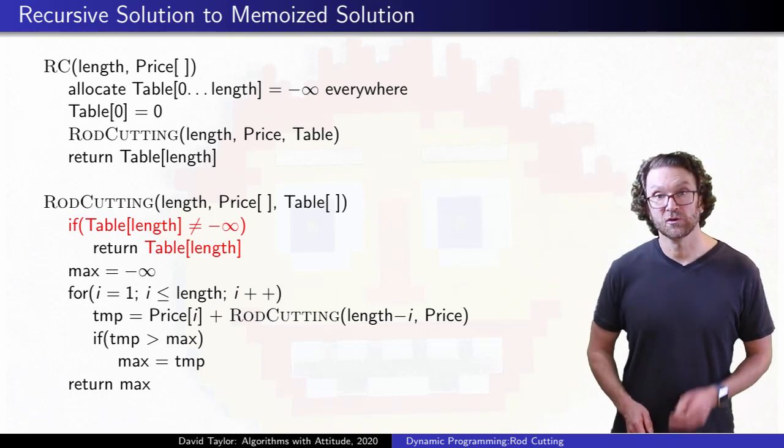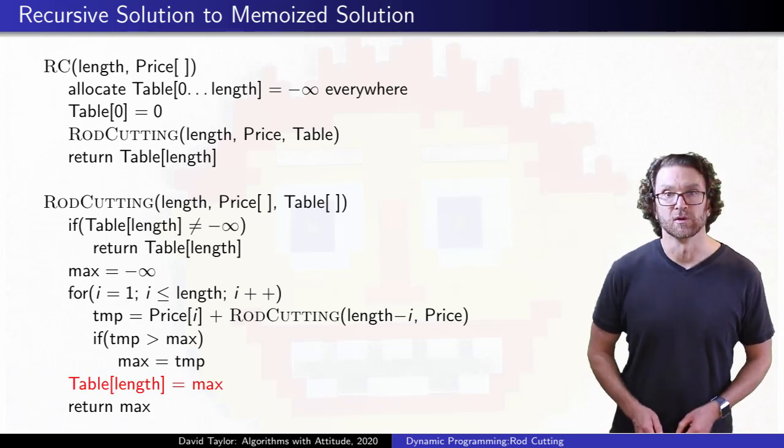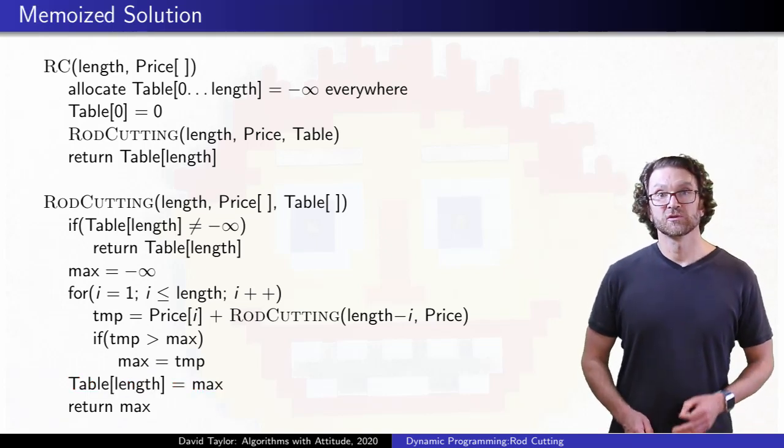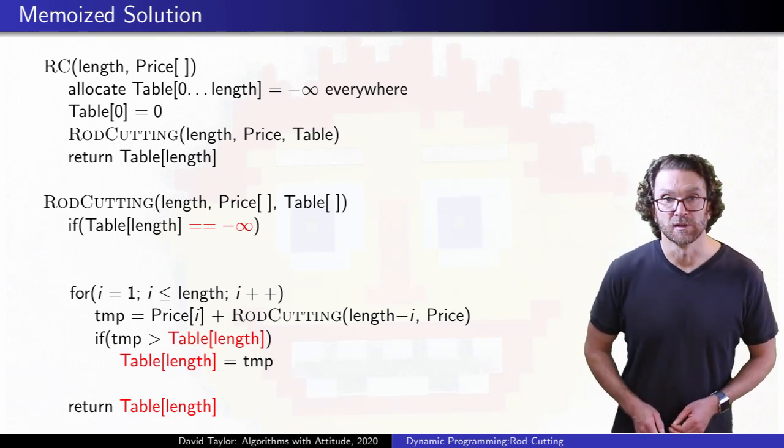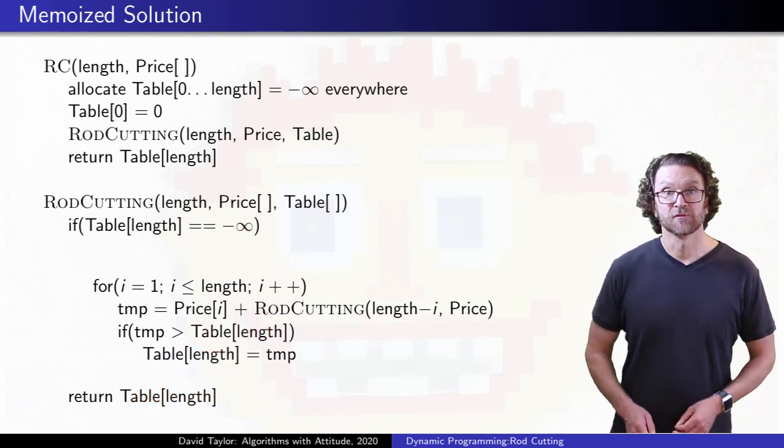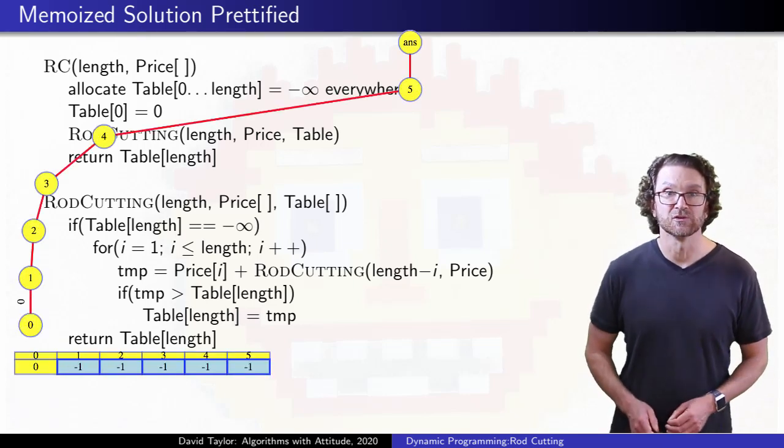If not, recursively figure out the answer, but store it before you return it. The code is almost exactly the same as before, or we can clean it up a little. Now, if we look at the same recursion tree for length 5, we see what happens.